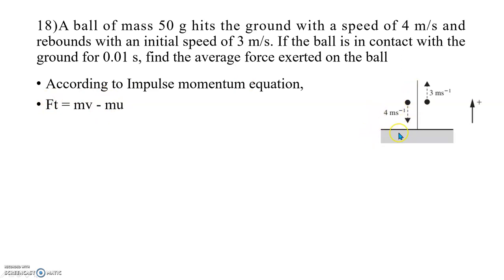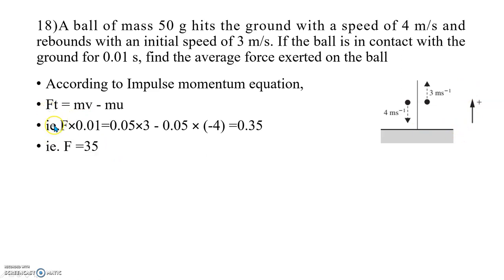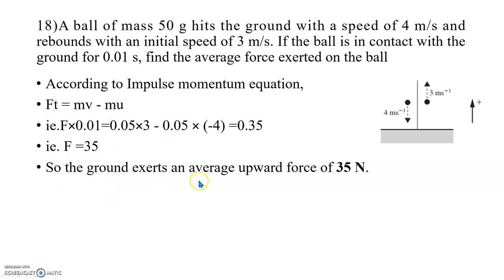As seen in the figure, the initial velocity is downward and the final velocity after rebound is upward. The upward direction is taken as positive. Substituting the given values into the equation, we get the force as 35 Newton. Since 35 is positive, the force is upward. So the ground exerts an average upward force of 35 Newton. This concludes the impulse-momentum equation or impulse-momentum principle.